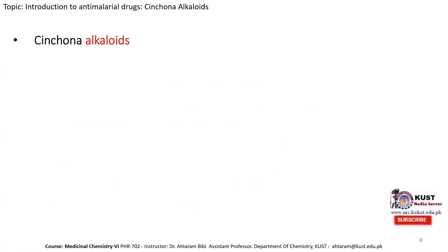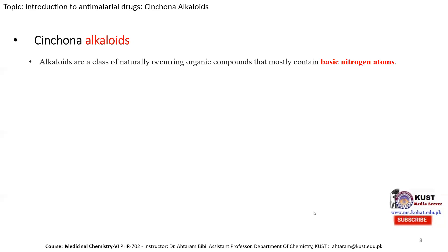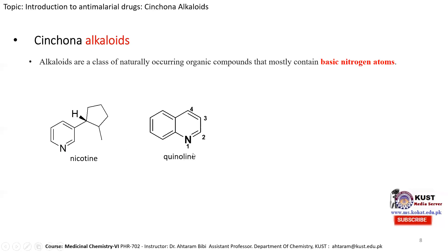Before starting cinchona alkaloids, let us understand what alkaloids are. Alkaloids are a class of naturally occurring organic compounds that mostly contain a basic nitrogen atom. For example, nicotine — consisting of a basic nitrogen atom — is a natural alkaloid. Quinoline also contains a basic nitrogen atom and is a naturally occurring compound; the lone pair on nitrogen readily accepts a proton, making it basic.